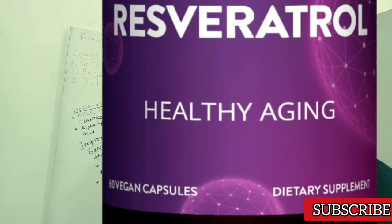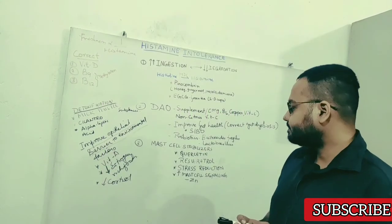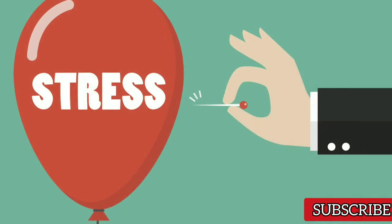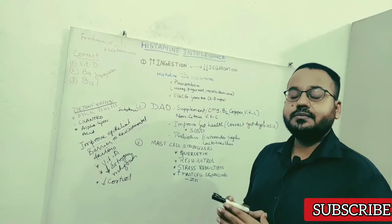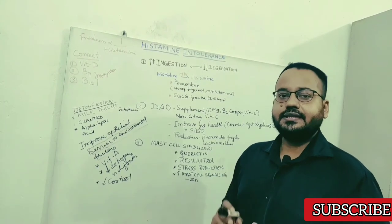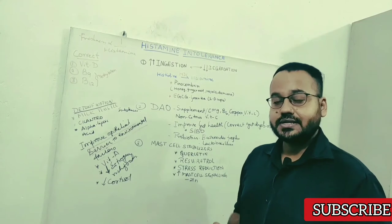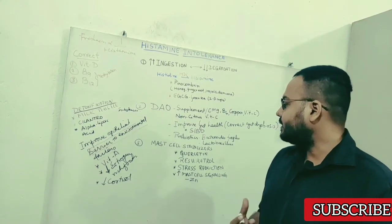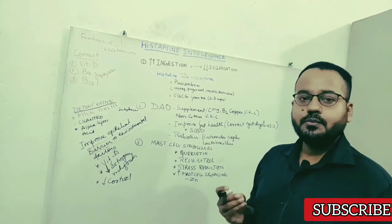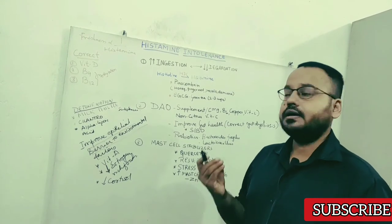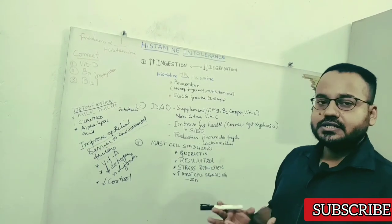Then resveratrol. This is also going to stabilize your mast cell and improve the functioning of mast cell and decrease histamine inside your body. Then stress reduction. This is also very important to prevent increased degranulation of histamine and it is seen that things like exposure to cold, exercise, any acute stress, they all can make mast cells unstable and there will be increased degranulation of histamine and that can lead to allergic symptoms.